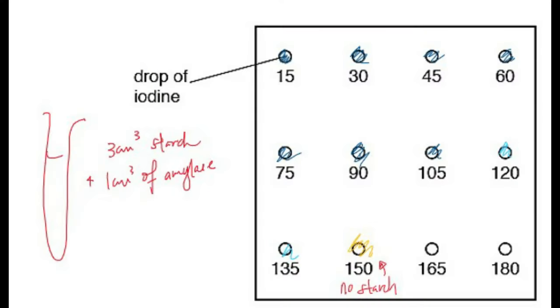Now that we are done preparing our different concentrations of amylase, we can go ahead and monitor the time course for the reaction. We're going to add 3 cm³ of starch, and then to that we add 1 cm³ of amylase, and immediately start the stopwatch. The idea is, every 15 seconds we will monitor the time course by taking a drop of the reaction mixture and putting it on the spotting tile.